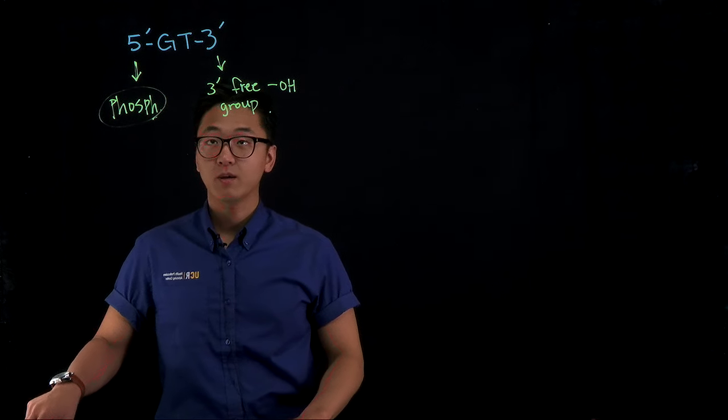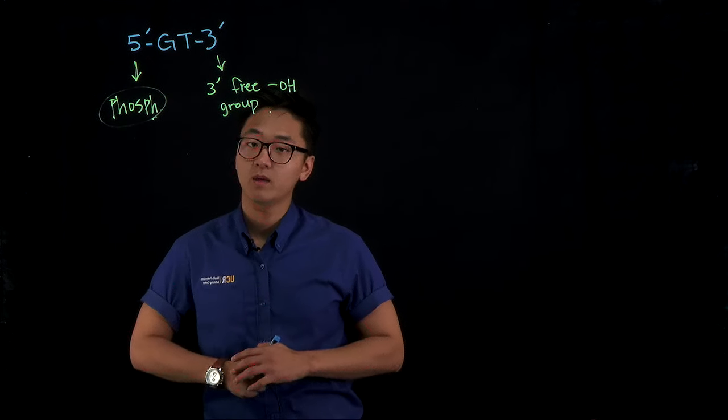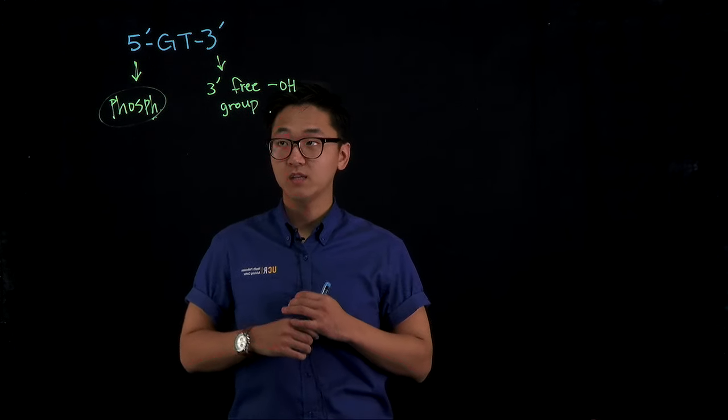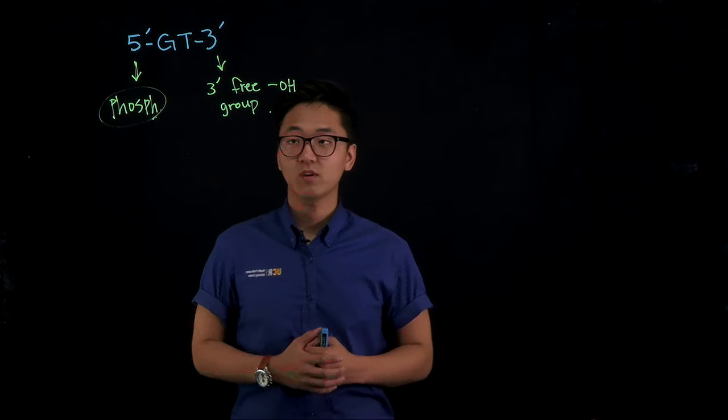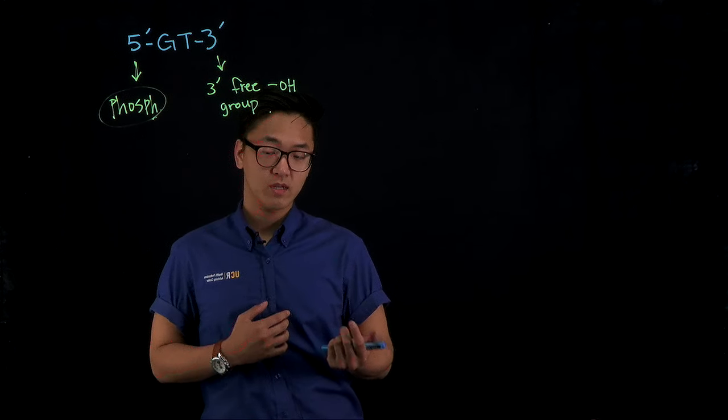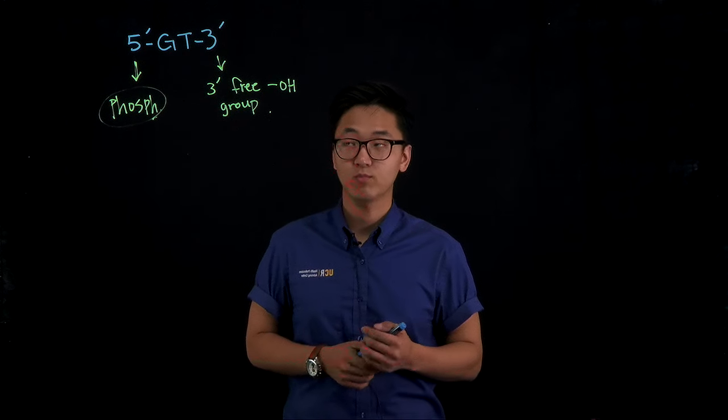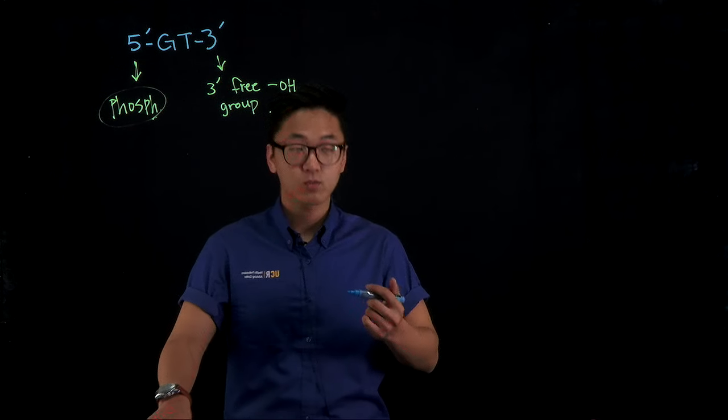So on the test, if you guys see a diagram of a DNA strand and then one end is phosphorylated and the other end is not phosphorylated, then we can tell which one is 5' and which one is 3'. So for this one,